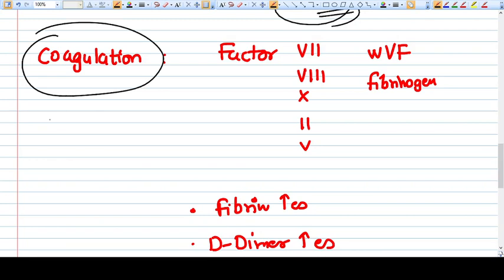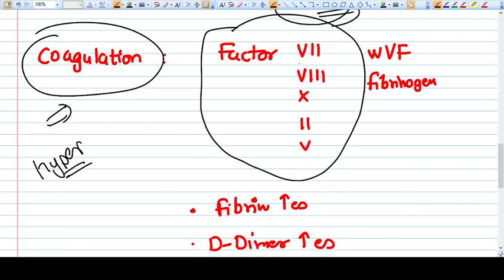Now comes the very important aspect that is coagulation. Generally pregnancy is a hypercoagulable state. You know that's why what factors increases in this thing: factor 5, factor 7, factor 8, factor 10, factor 2, factor 1, von Willebrand factor, fibrinogen.